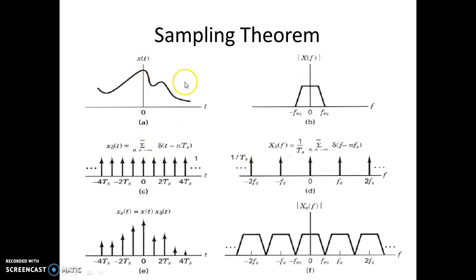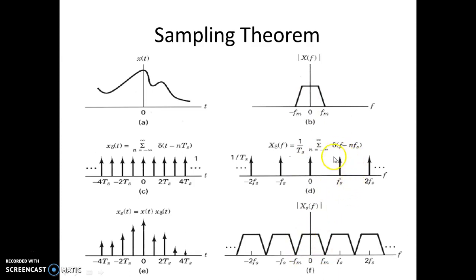This multiplication in the time domain becomes convolution in the frequency domain. When you convolve a signal with an impulse, you get the same signal displaced by the position of that impulse. For example, convolving X(f) with the impulse positioned at f equal to 0 gives you the same signal X(f). With another impulse present, convolving X(f) with it gives you the signal X(f) shifted by fs, so you have that shifted signal here.